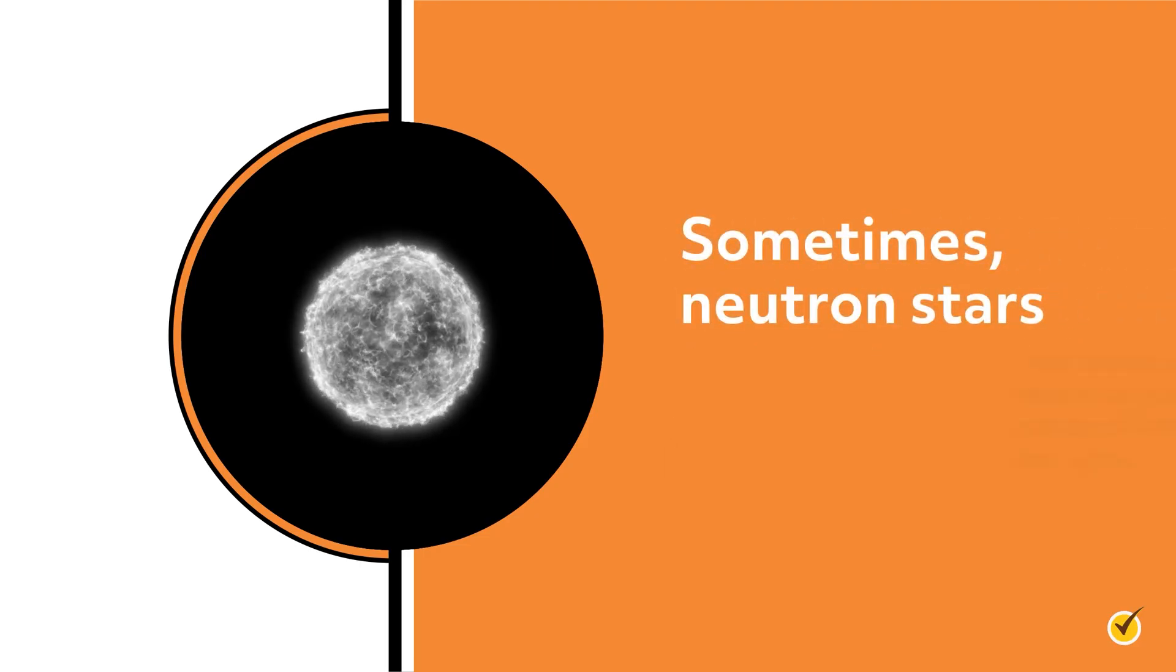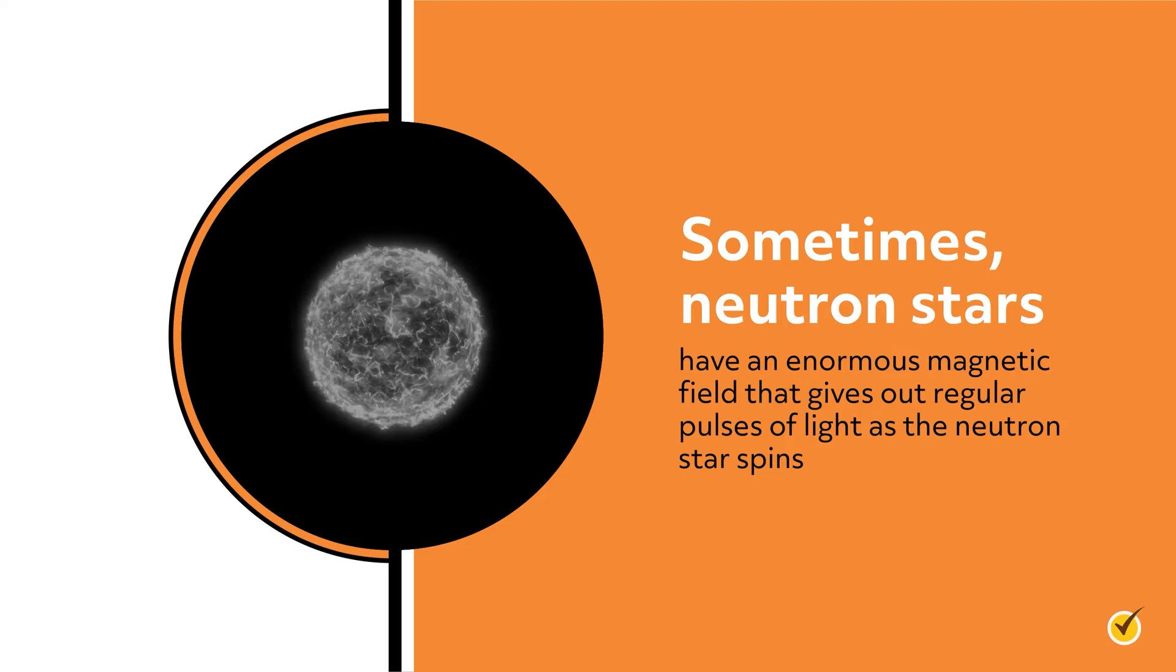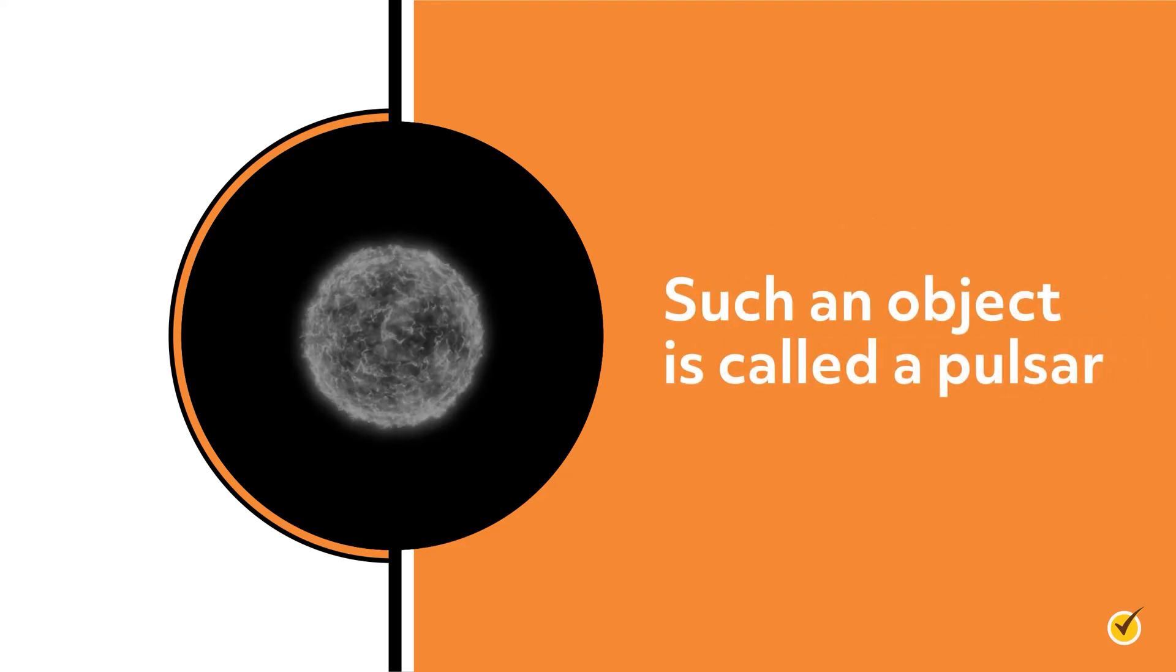Sometimes, neutron stars have an enormous magnetic field that gives out regular pulses of light as a neutron star spins. Such an object is called a pulsar.